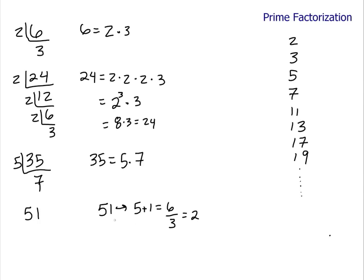You can take any number you want. If you add the digits and you divide, if you can divide by 3 evenly, then you know 3 will divide into the original number. 3 goes into 51 seventeen times, which again is a prime number, 17. So 51 is equal to 3 times 17.